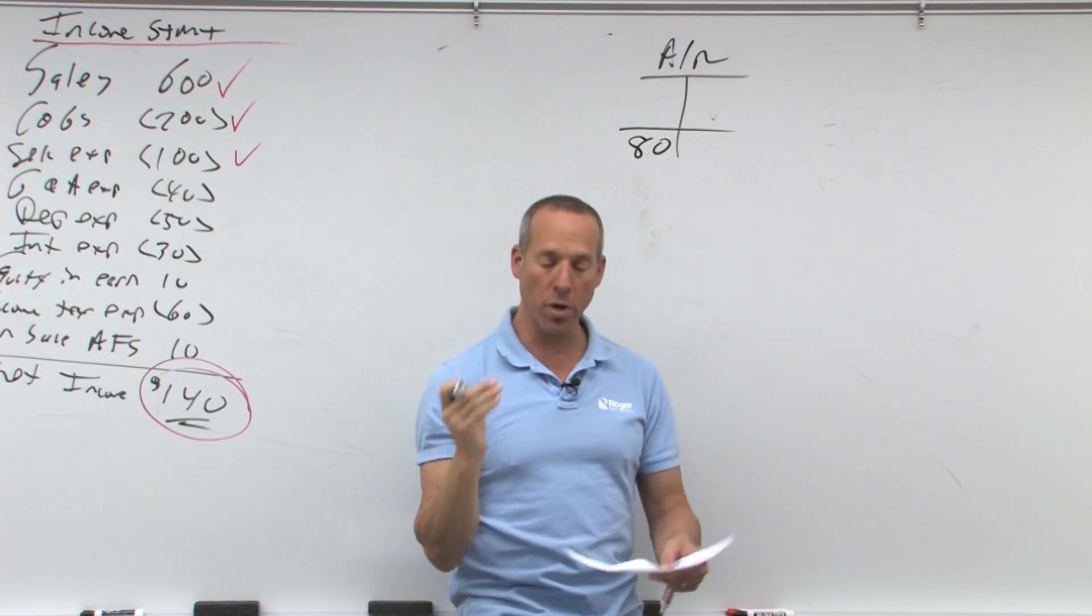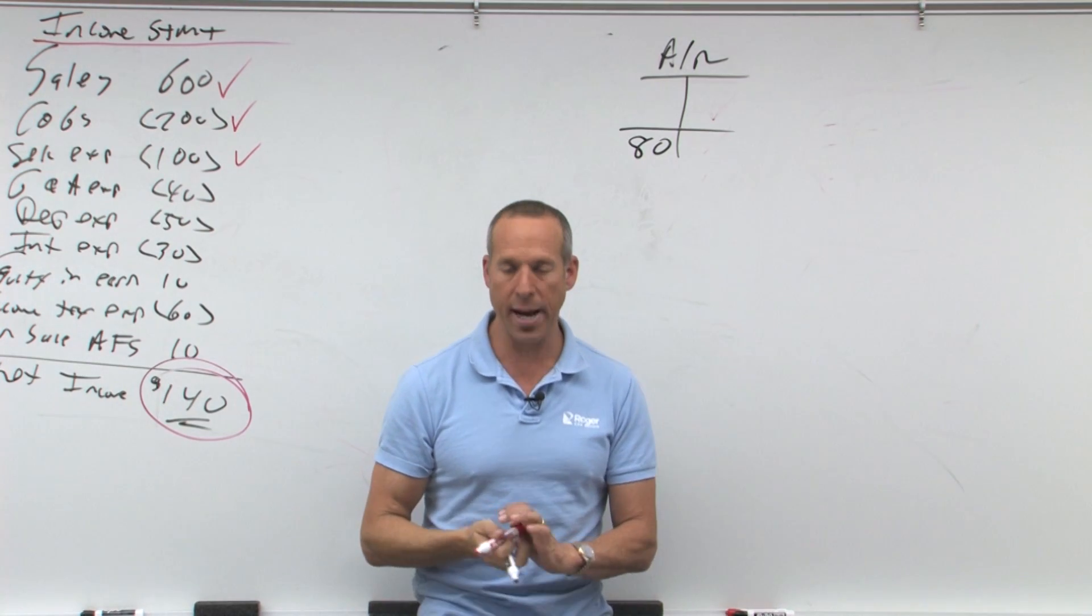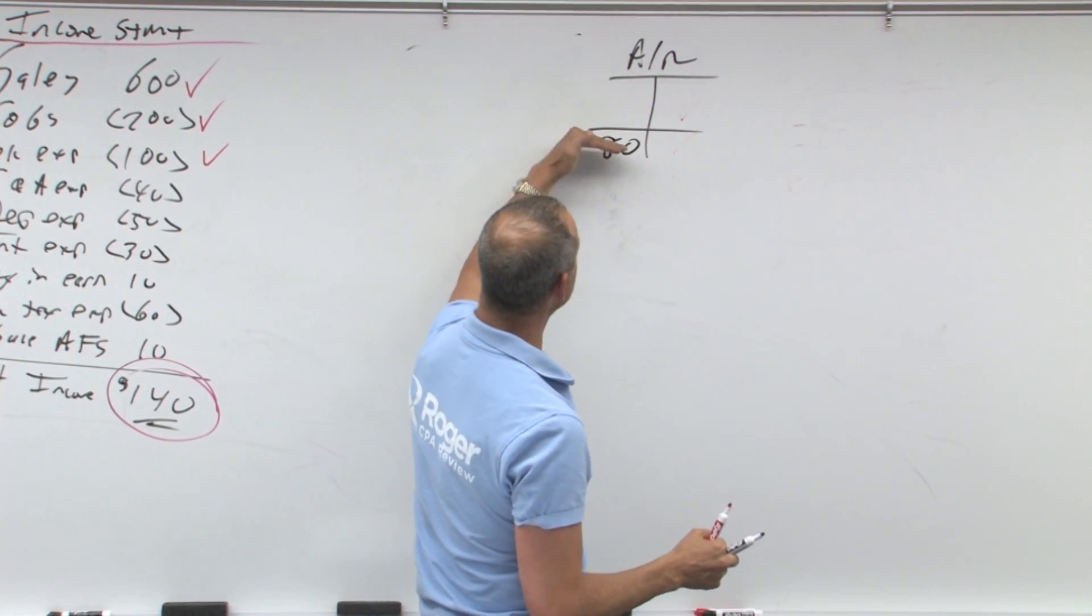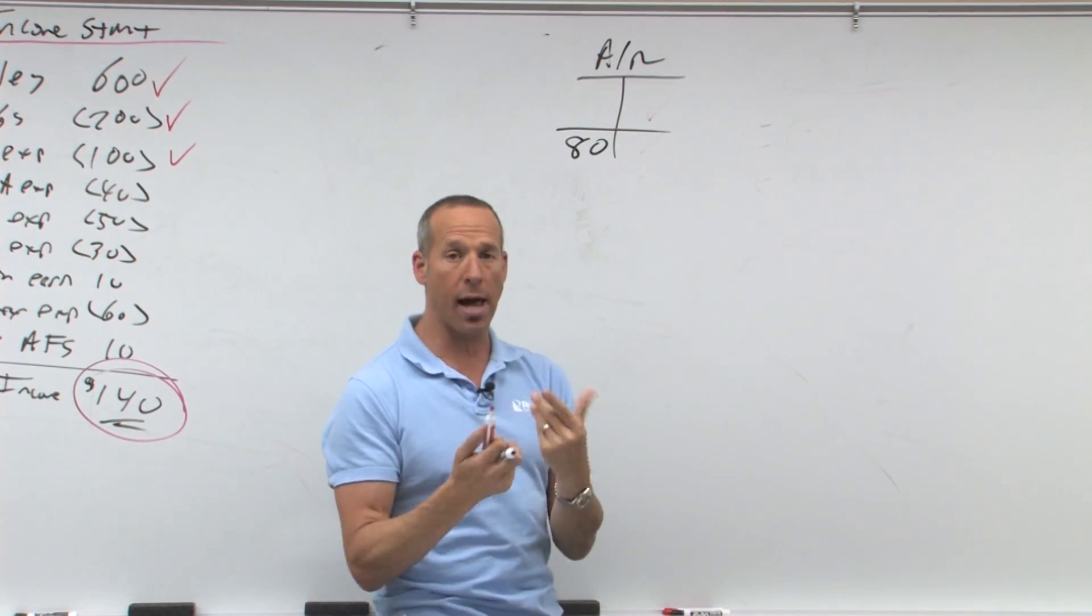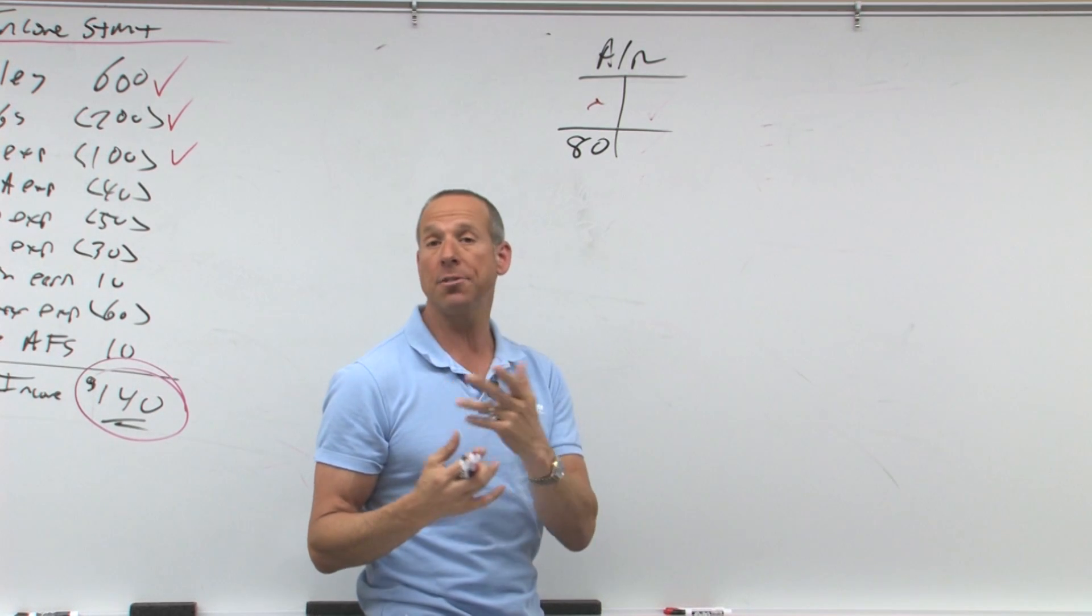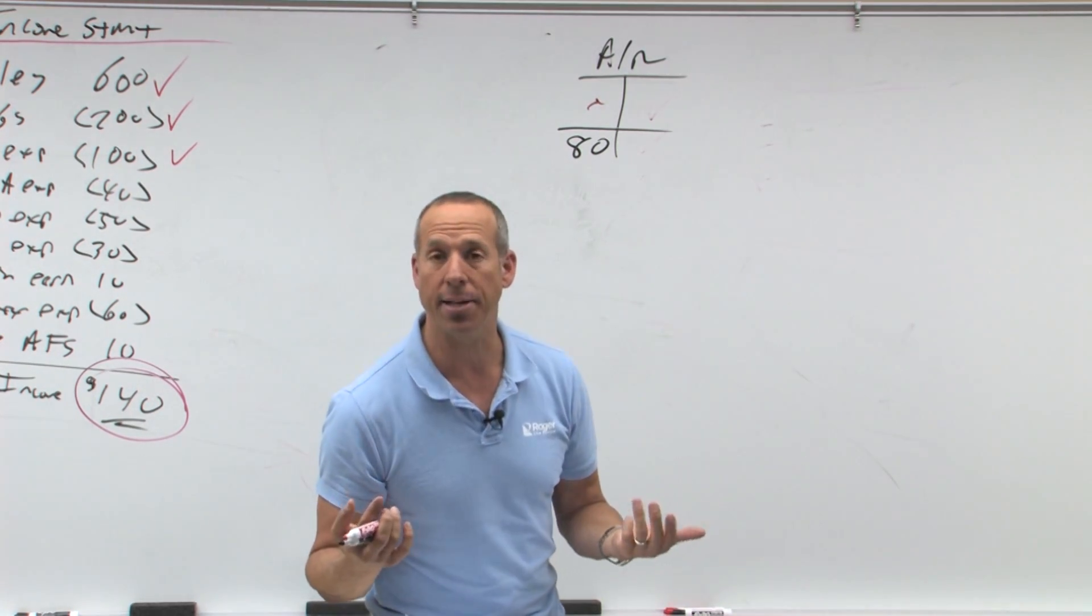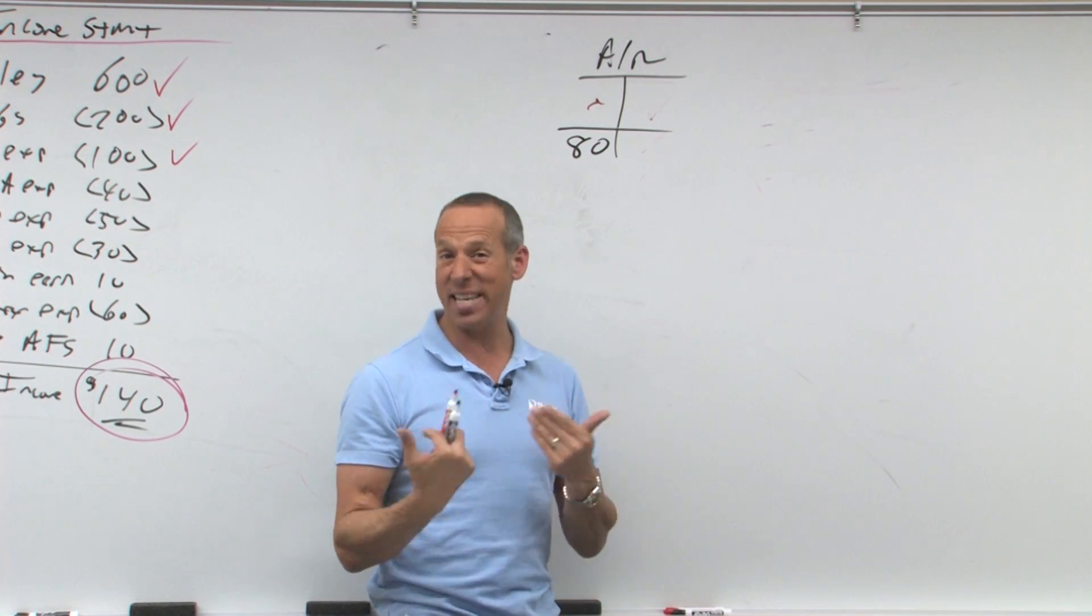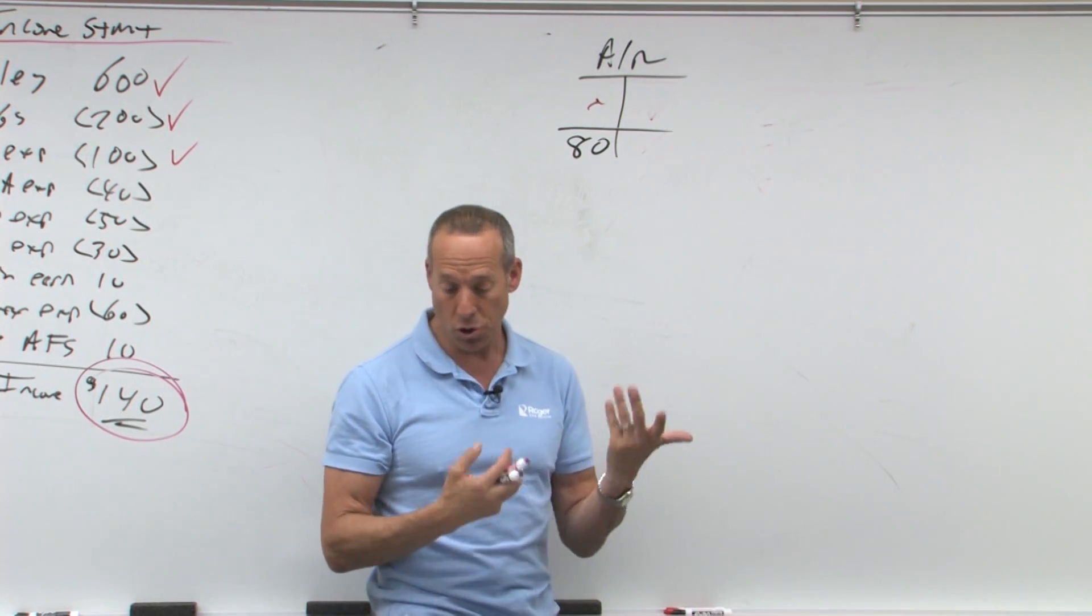So what this means is during the year, this account changed by $80. Now I'm gonna put it here as a debit to 80, because that's an increase. We're gonna have to figure out what goes here to cause the change. Now receivables would go up because you had sales that weren't collected in cash. So that would mean some of the sales may not have been cash. They may have been an IOU called a receivable.